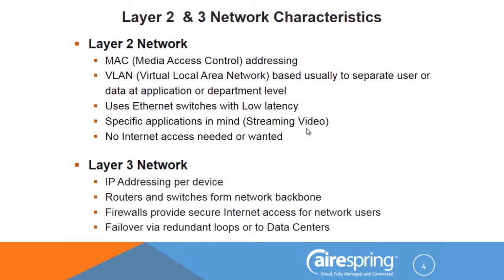Spanning tree protocol was very popular in the late 80s and early 90s — all you needed to run an Ethernet network. Then we got more sophisticated and brought out the first virtual part of networking in the late 80s called VLANs — virtual local area networks. VLANs are used to separate traffic either by users or by application. In the early days, we put all the finance people in one VLAN, all the sales people in another — they couldn't see each other's data because they were on separate virtual networks sharing the same physical medium. Now it's more application-based for protection and traffic control.